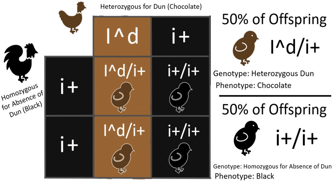The second pairing is a heterozygous Dunn bird bred to a black bird homozygous for the absence of Dunn. The hobby name of the bird that is heterozygous Dunn would be chocolate, so essentially this pairing is a chocolate chicken bred to a black. In this pairing, 50% of the offspring should be Dunn or chocolate, with a genotype of I^D/i+, and 50% should be black, with a genotype of i+/i+.